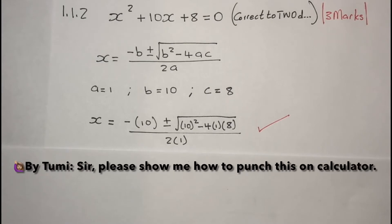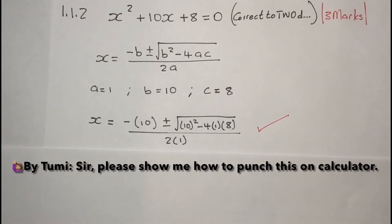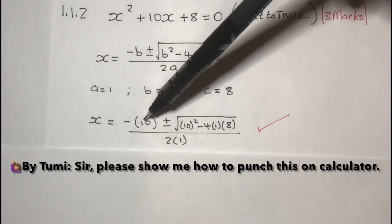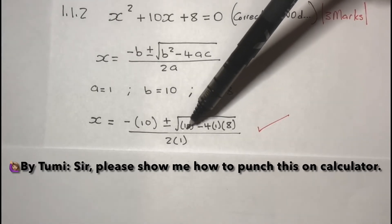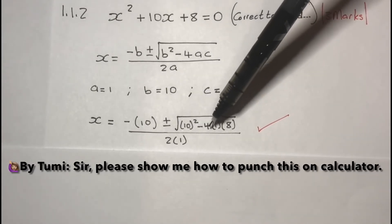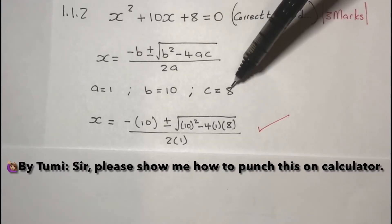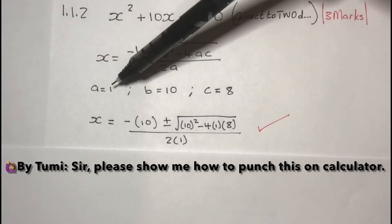Next step, you substitute your values of a, b, and c into the formula. So you've got minus b, which is 10, plus or minus square root of b, which is 10 squared, minus 4 times a, which is 1, times c, which is 8, all over 2a, your a being 1.